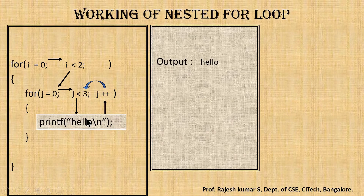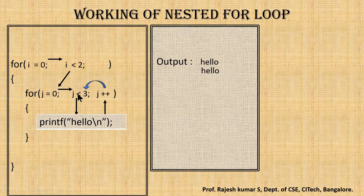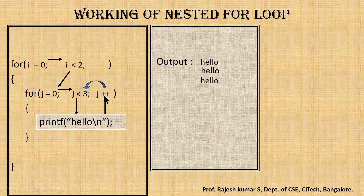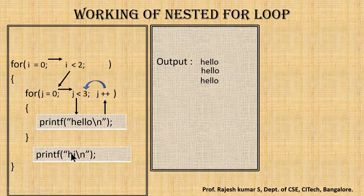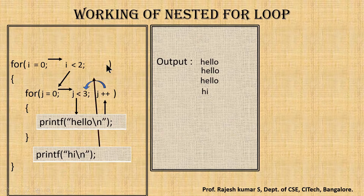Hello is printed again on the monitor screen. We increment the inner for loop — j becomes two. Two is less than three — true — so one more hello is printed. After that, j becomes three. We check: three is less than three — false. When this condition is false, it checks whether there is a statement belonging to the outer for loop. There is a statement: printf of i. So i will be printed on the monitor screen.